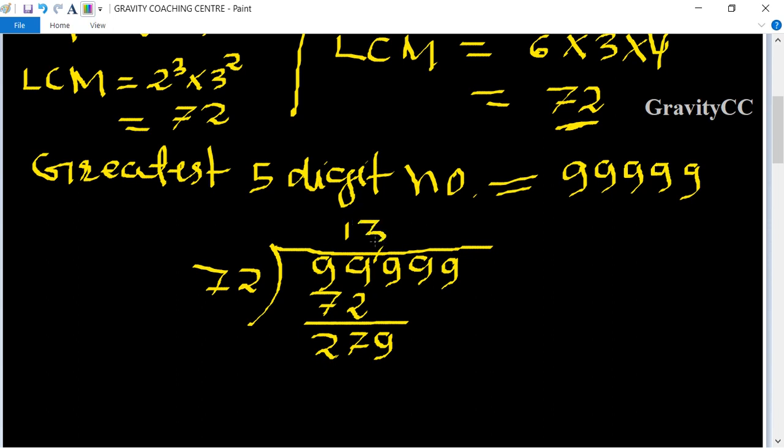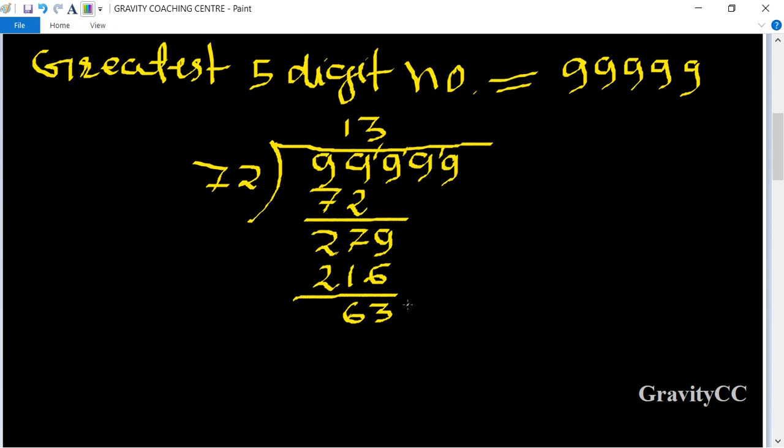Bring down 9. 3 times 72 is 216. Subtract from 279 to get 63. Then bring down 9.